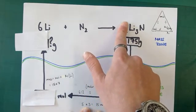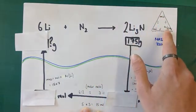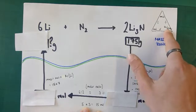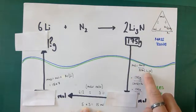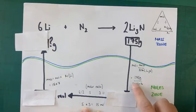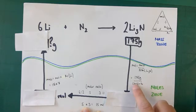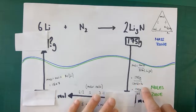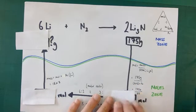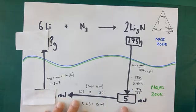Moles equals mass divided by RFM. The relative formula mass of lithium nitride (Li₃N) is three lithiums — 3×7 — plus one nitrogen (14), giving 35. So 175 divided by 35 gives me 5 moles of lithium nitride.